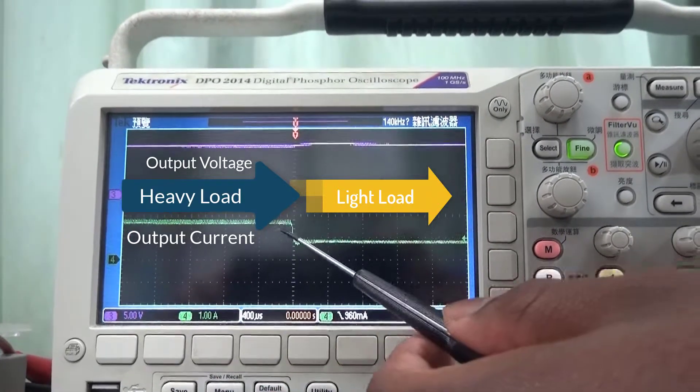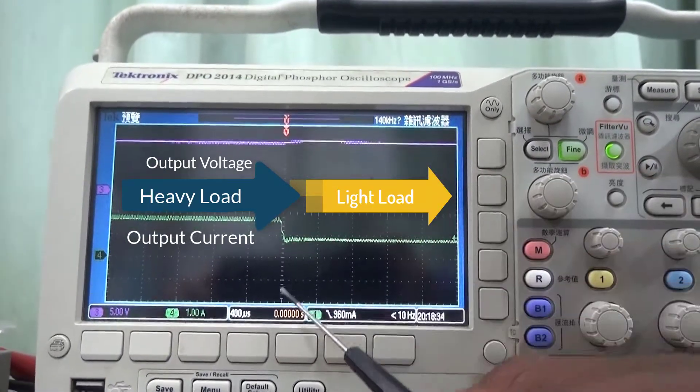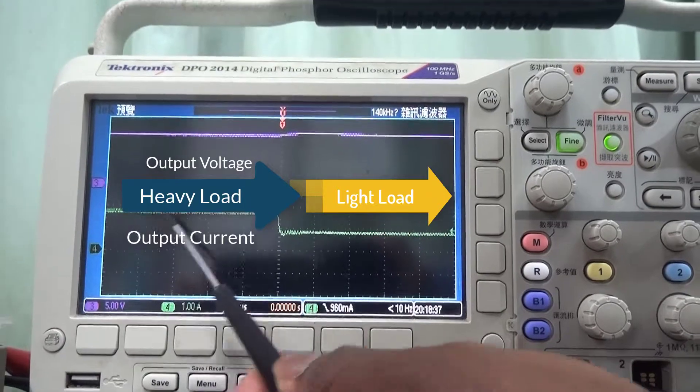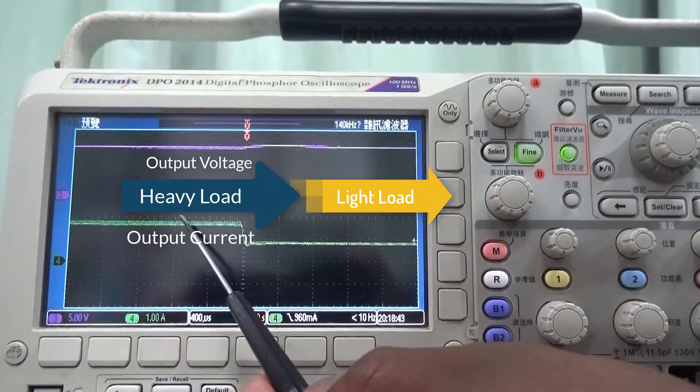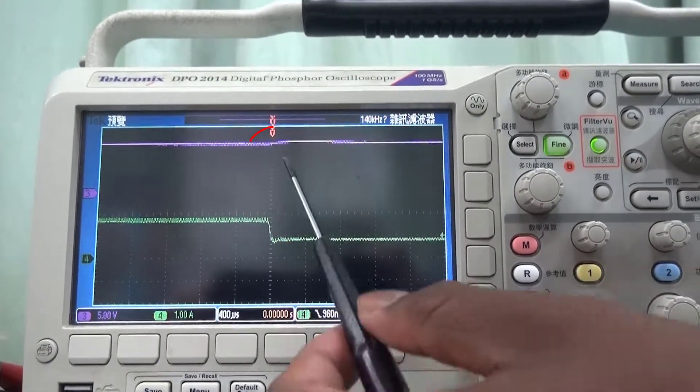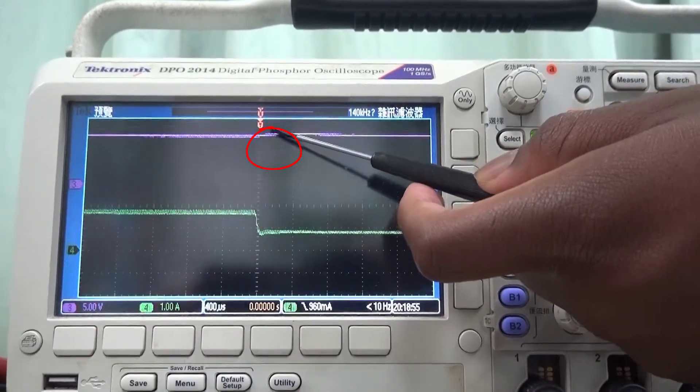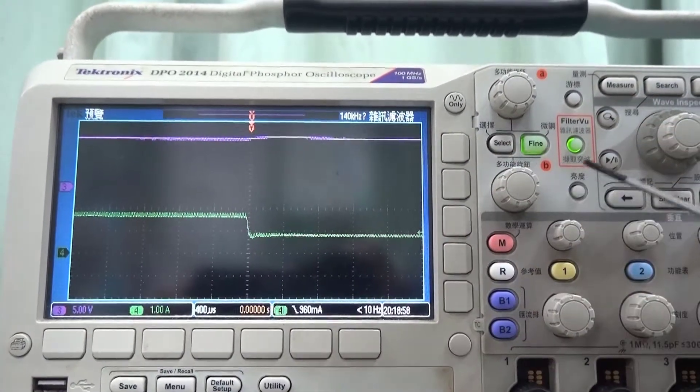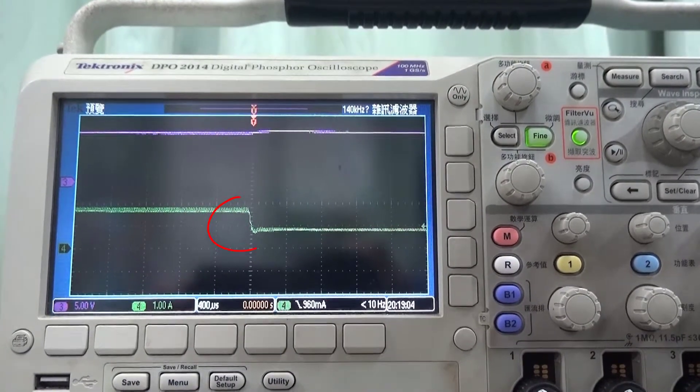The green plot is the output current and the purple is the output voltage. We can see at this point in time the current goes from high to low, indicating that we are moving from a high load here to a low load down here. We can see up here that there is a very slight variation, a slight increase in the output voltage as we move from a heavy load to a light load.